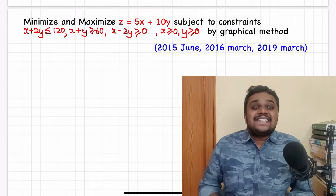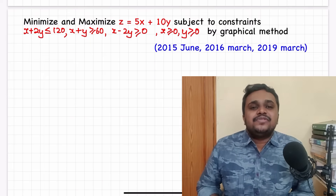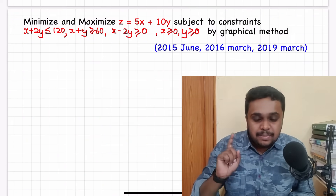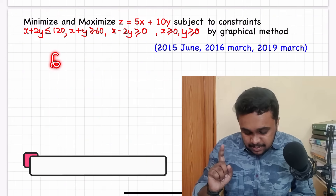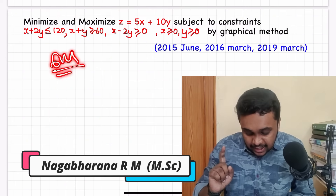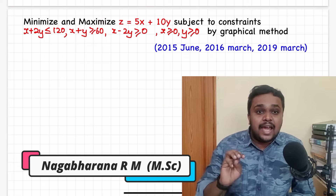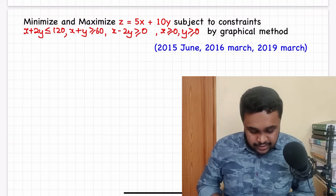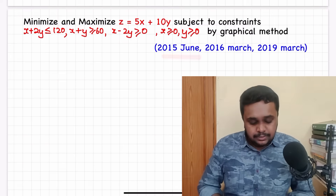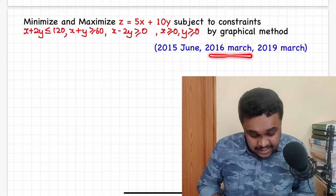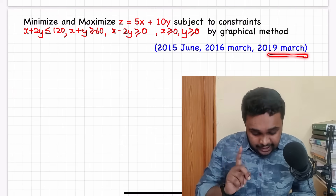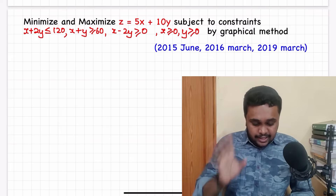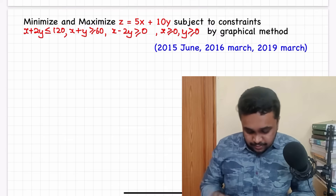Hello students and welcome to Physics Pep Talk. In this video, we will solve the LPP chapter 6 marks. We will solve the PYQs, having 3 constraints. This question appeared in 2015 June, 2016 March, and 2019 March — the same question is asked, so this is a repetitive question.